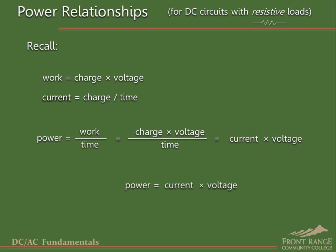In the case of electric circuits, it is electrical energy that is being converted into another form, and it is the rate at which this conversion occurs that is called electrical power. As you learned previously, the base unit of power is the watt.